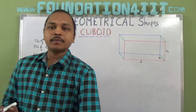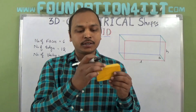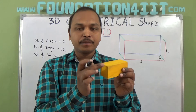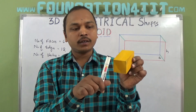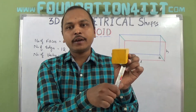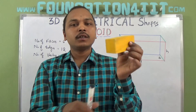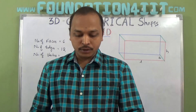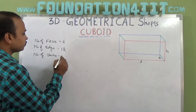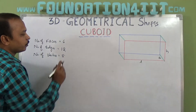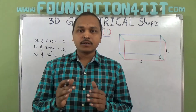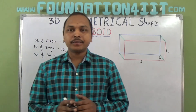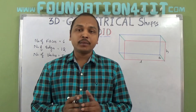Vertices are the points where three edges meet — also called corners. Counting: four on the top and four on the bottom gives four plus four equals eight. The number of vertices in a cuboid is eight.